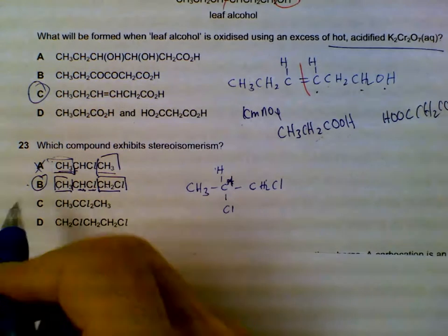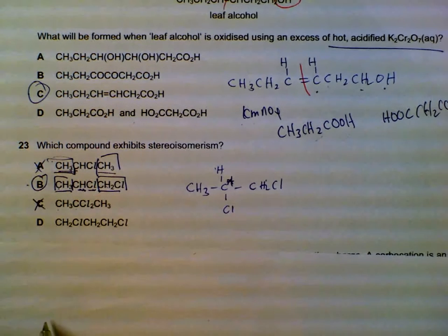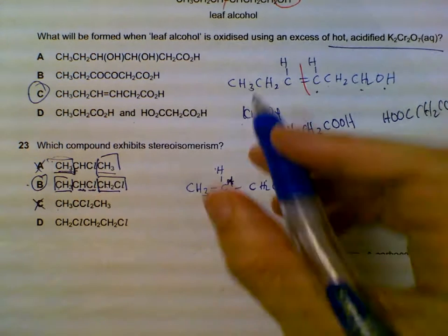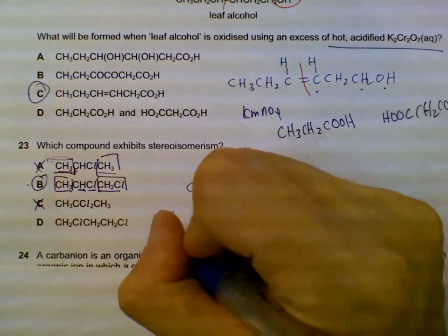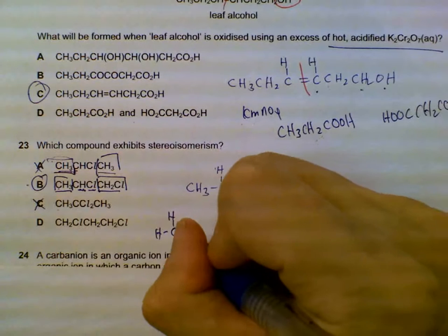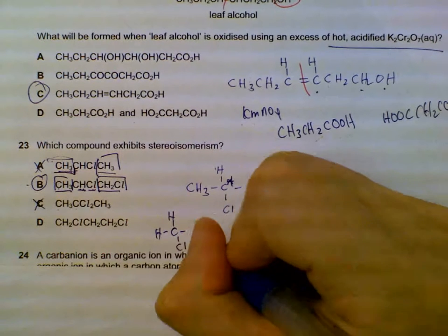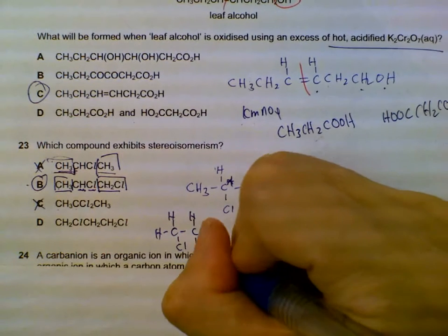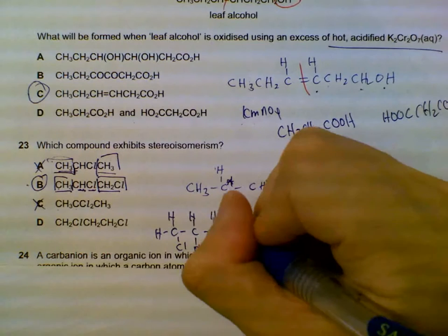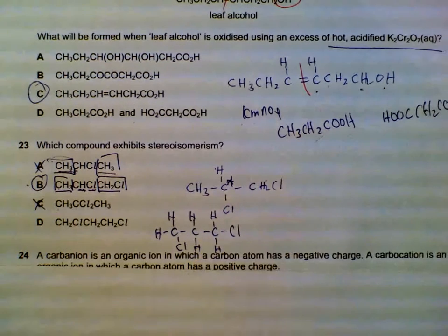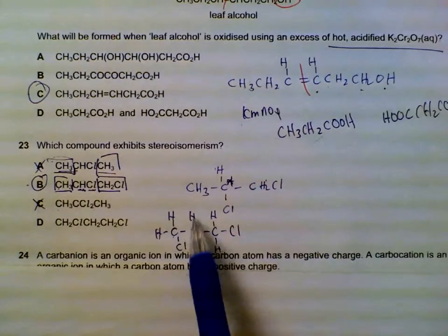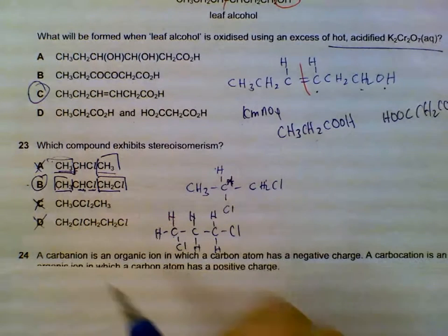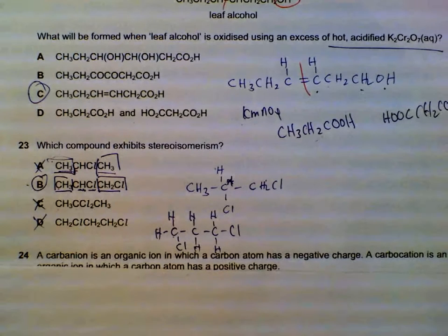Option C has a carbon with two chlorines and two methyl groups joined to it — definitely not chiral. For option D, drawing the structure out: CH₂–CH₂–CH₂–CH₂ and none of those carbons have four different groups — they each have two hydrogens. So it is definitely B — one chiral carbon with four different substituents.